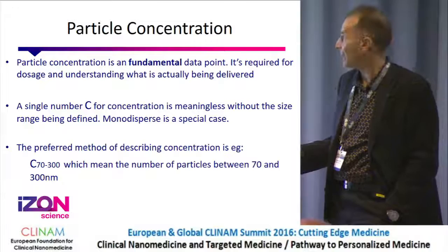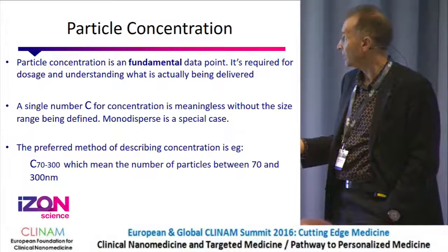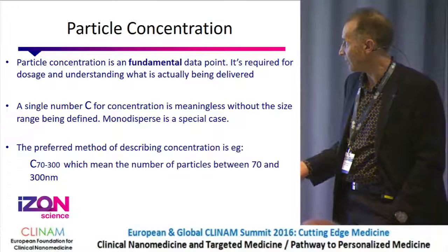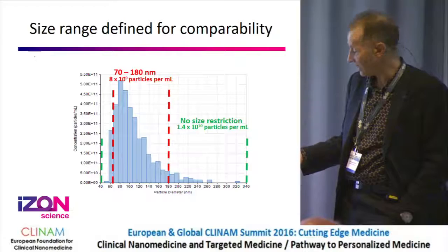Particle concentration — people think it's just a number, but it's a fundamental data point. In medicine, it's fundamental for dosage — what's actually being delivered. Because people are used to using DLS, they don't typically measure it. If it's monodispersed, a number has validity. But if it's not monodispersed — and many things are not — then you need to describe concentration by the size range that you're measuring. It's an important point that few people get.